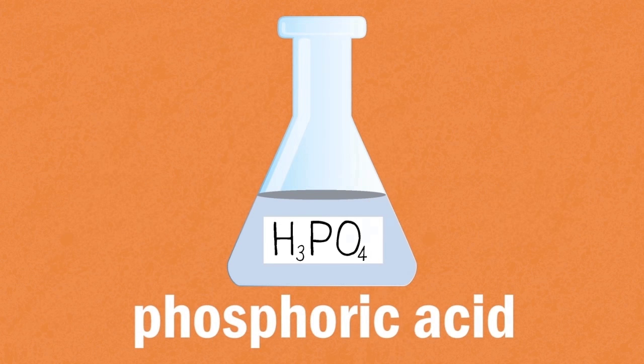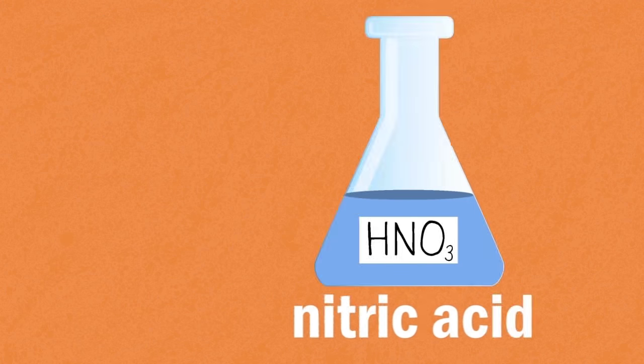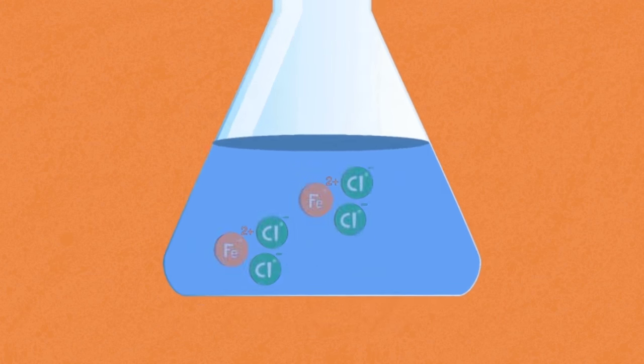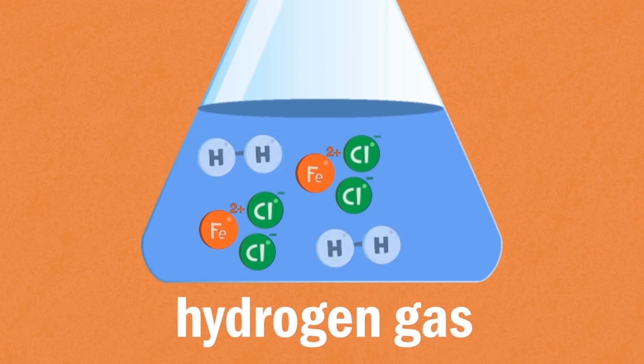They include sulfuric acid, phosphoric acid, nitric acid and hydrochloric acid. In dilute concentrations they will produce aqueous iron salts and hydrogen gas.